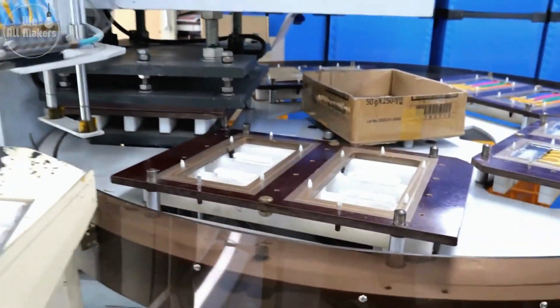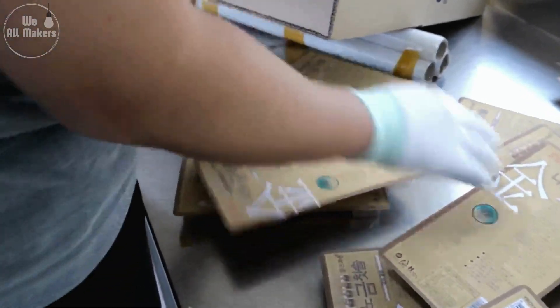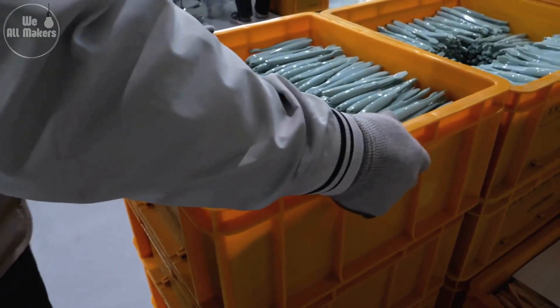This means that the packaging not only keeps your toothbrush clean and safe until you're ready to use it, but also helps reduce waste and protect our planet. Plus, the packaging is designed to be compact and lightweight, which reduces the carbon footprint during shipping.